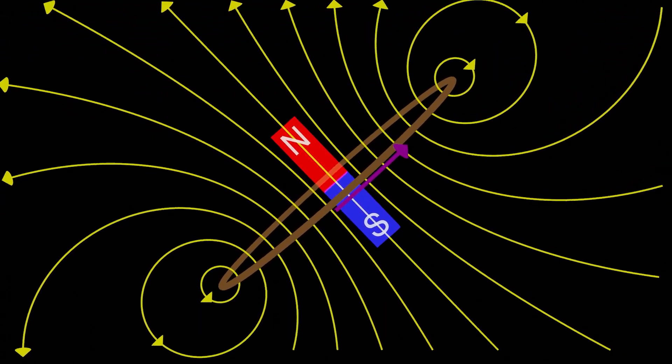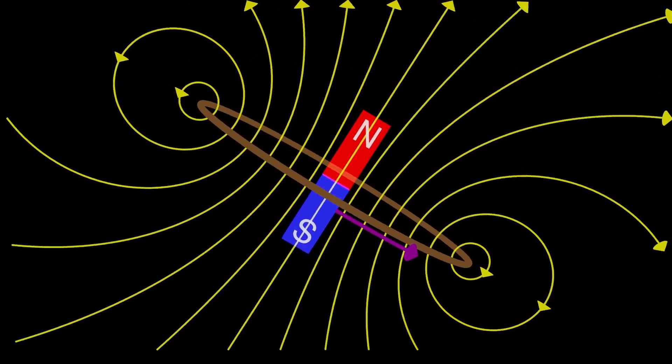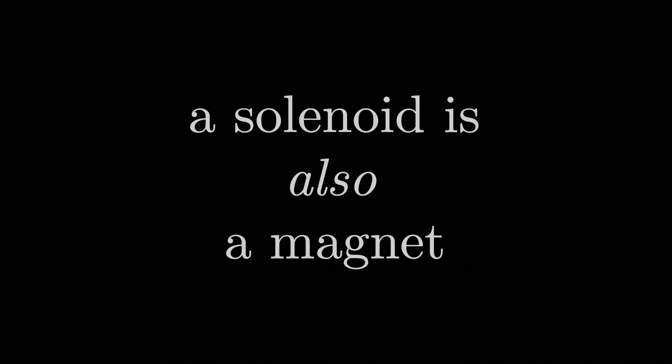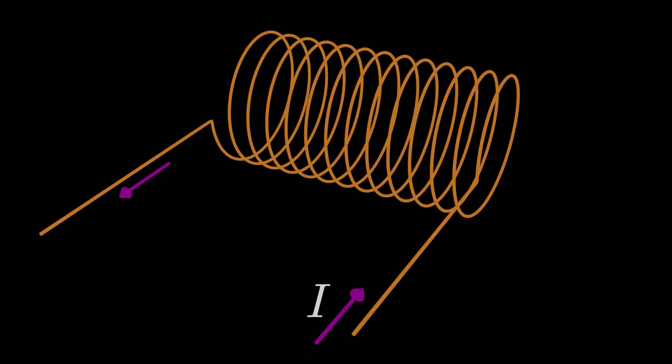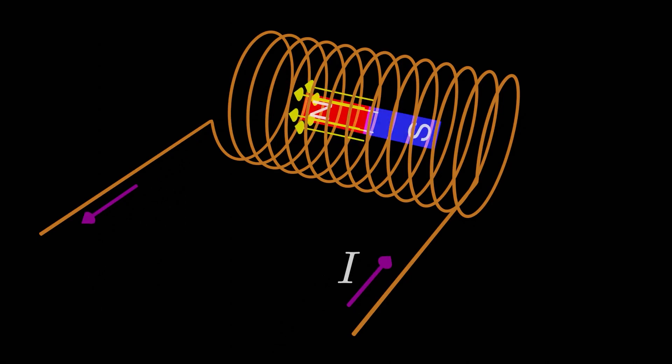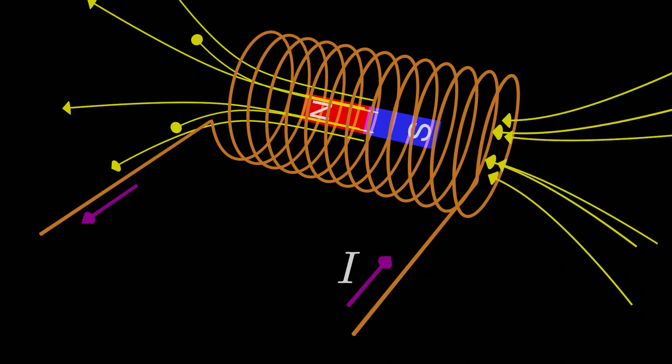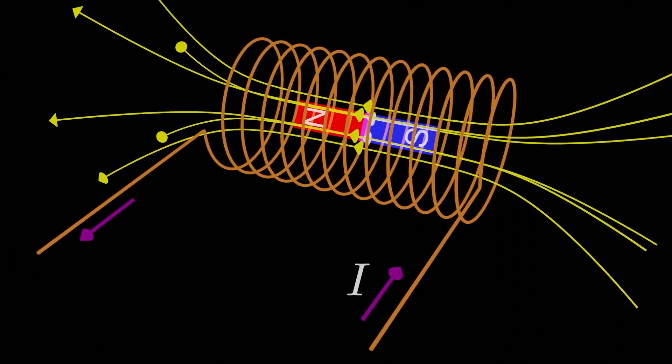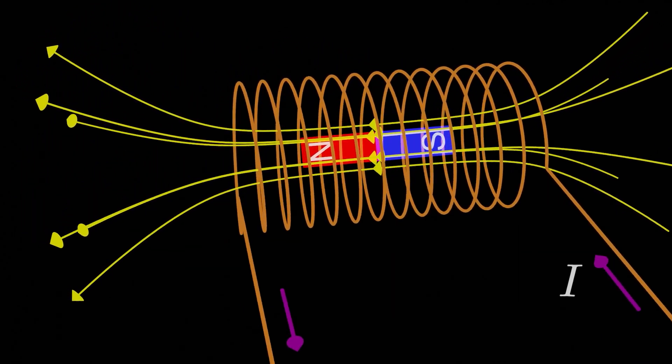Do we remember something else that creates a somewhat similar looking magnetic field distribution? Solenoids. And in fact, a solenoid is also a magnet. A solenoid is a magnet in the sense that it has a magnetic north pole where field lines emerge from, and a magnetic south pole where they circle back into.